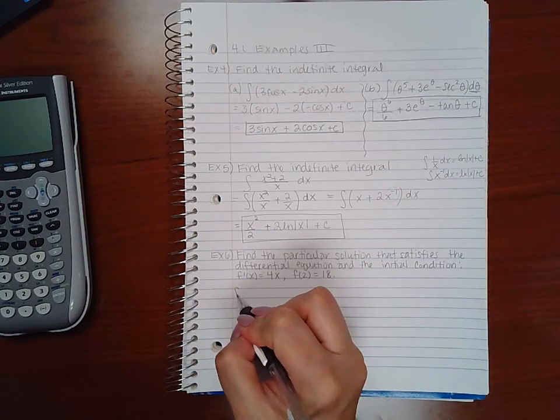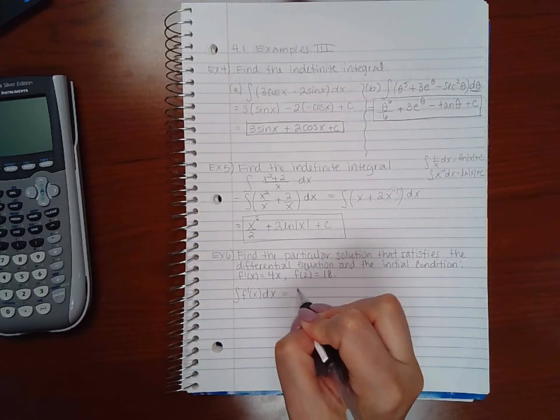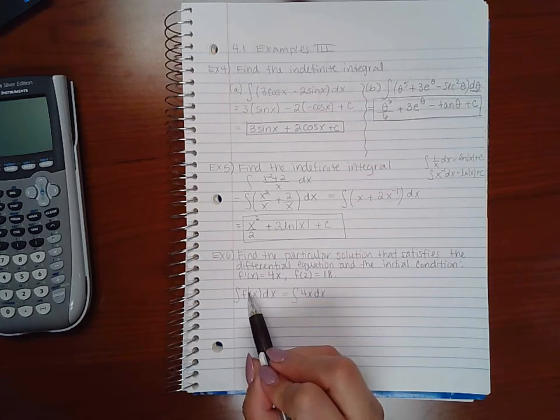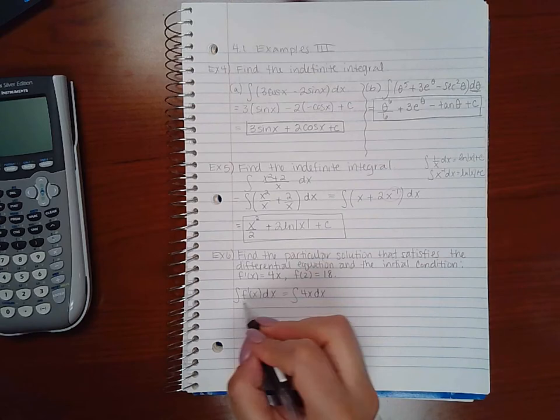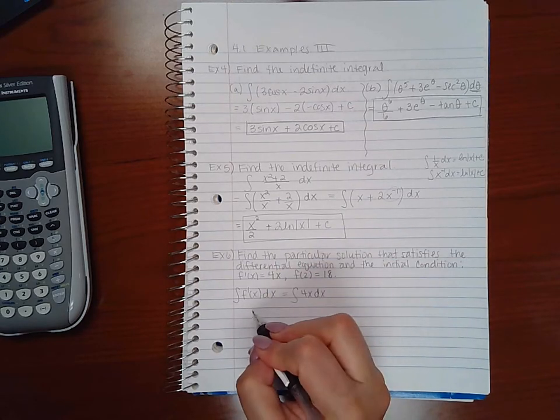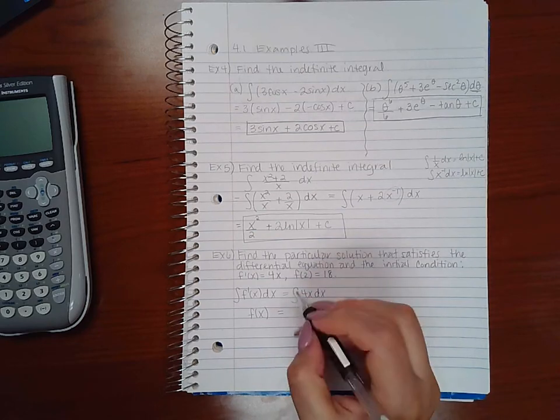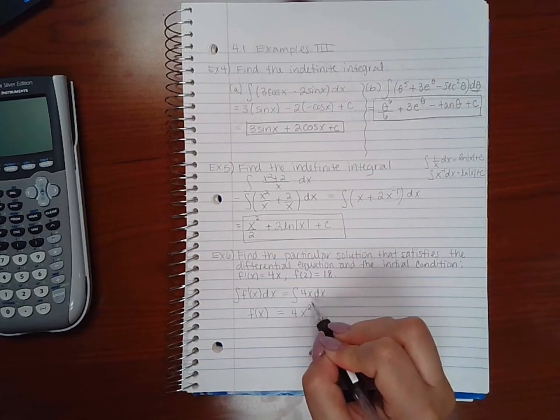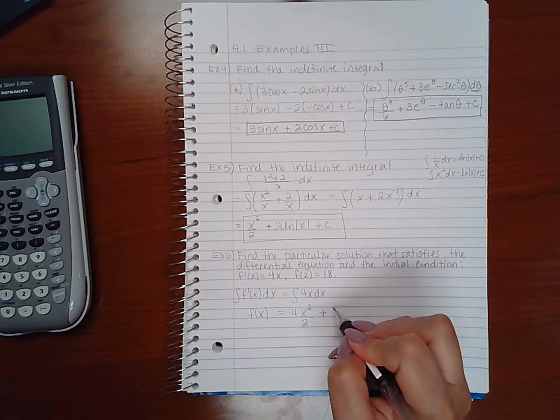So the integral of f prime of x dx and the integral of 4x dx. Remember, derivatives and integrals are opposite of each other, so when you have both of them, they inverse each other, so you end up with the original function f of x. Over here I have a constant multiplier, and then I'm going to add one to the exponent and divide by the new exponent.